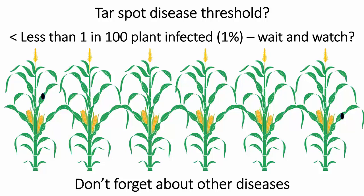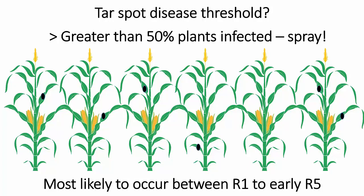One of the experiments I have set up this year is trying to develop a threshold. My best guess at this point: if we've got less than one in 100 plants infected, we should probably wait and watch for tar spot. You've got to scout pretty regularly because this can get moving quickly. My thinking this year is to wait until we hit about a 50% plants infected threshold — not covered in tar spot, but one or two spots on a plant constitutes infection. Once we get to 50% of plants infected — and I'm thinking earleaf and above — then I'm going to pull the trigger and make a spray. I'll compare that to a standard application at R1, and I'll have the data at the end of the season.